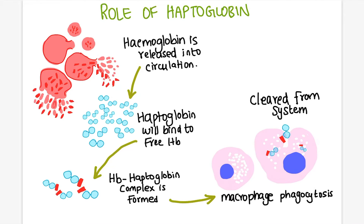But in the same scenario, if haptoglobin is present, the circulating haptoglobin will bind with free hemoglobin. A complex of hemoglobin and haptoglobin is formed. This complex is recognized by macrophages, which will swallow it, and free hemoglobin is cleared from the circulation.